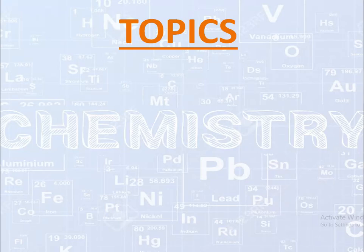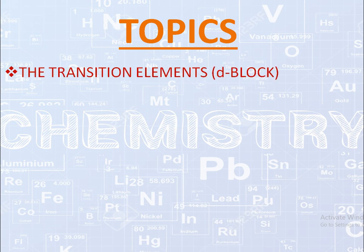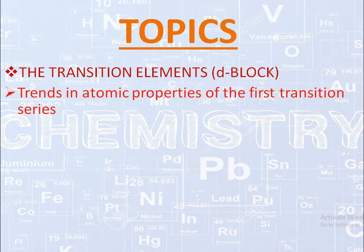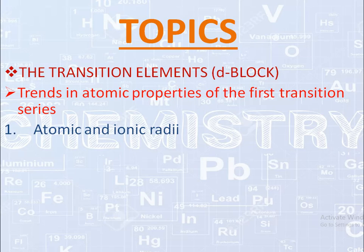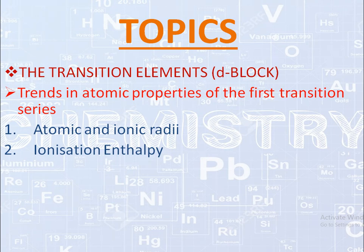We are discussing the trends in atomic properties of transition elements, also known as D-block elements. Till now, we have discussed atomic and ionic radii, in which we learned that from left to right atomic and ionic size decreases in any transition series. Next was ionization enthalpy, in which we concluded that from left to right ionization enthalpy increases in any transition series.